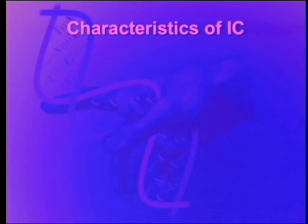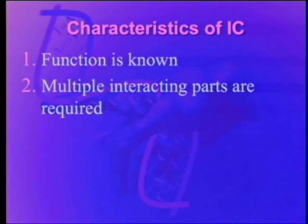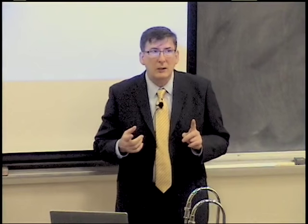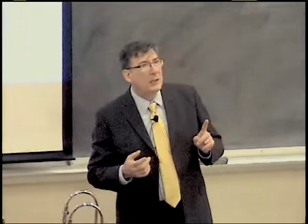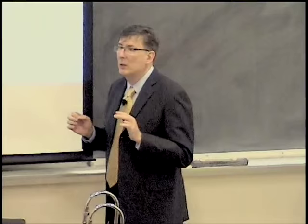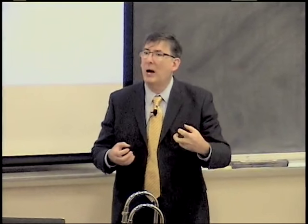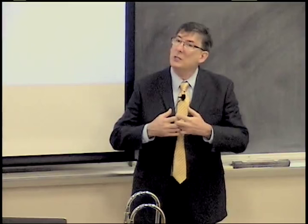What are the characteristics of an irreducibly complex system? Well, first of all, the function needs to be known. If you look at something and it seems very complicated, but you don't know what it does, you probably shouldn't get too excited about calling it an irreducibly complex system. Secondly, it has multiple interacting parts. Mike Behe never said that every single part must contribute in such a way that the removal of that part will destroy the function. Several parts must be necessary for the function, but not necessarily all the parts.